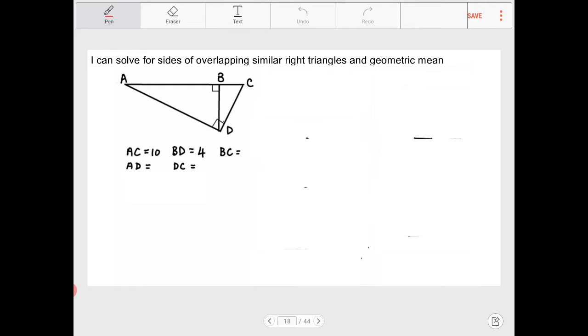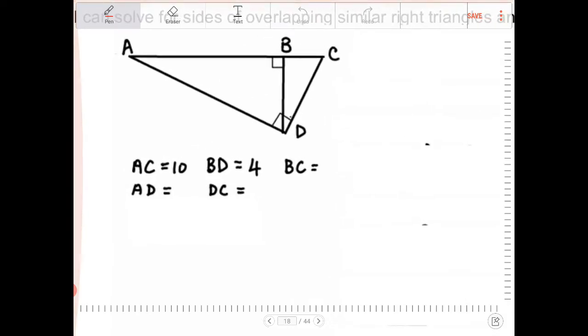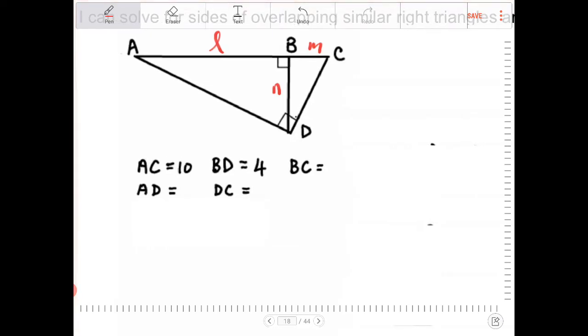Let's take a look at another problem. I know that A, and again, pause the video to see if you can try this out on your own. I'm going to call this AB L, and BC I'm going to call that M. I'm going to call BD N. This time, we're looking for AD, and we're looking for DC, and we're looking for BC, which is fine. So I know that I have AC is equal to 10, BD is equal to 4, and that's all the information that you're given.